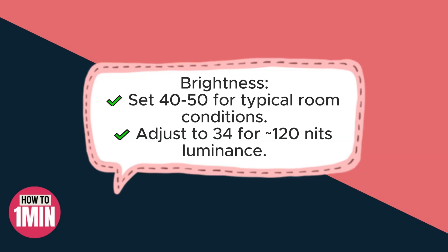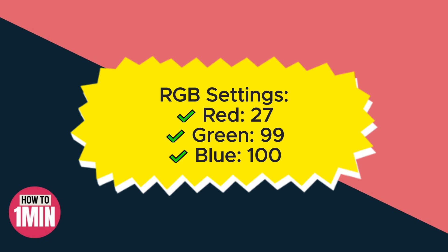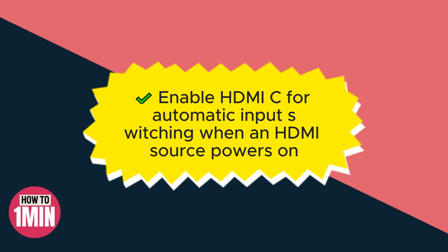The RGB settings should be red 27, green 99, and blue 100. Enable HDMI CEC for automatic input switching when an HDMI source powers on.